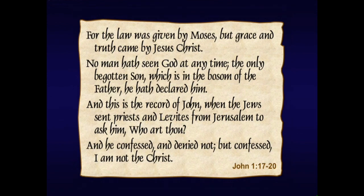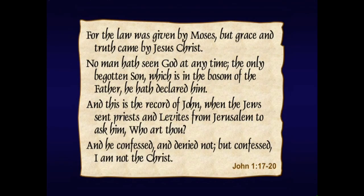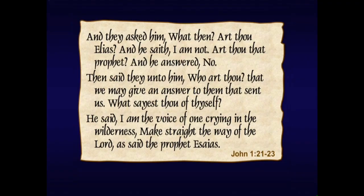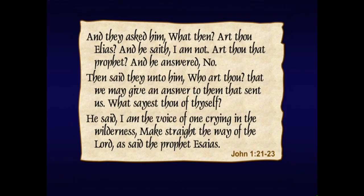The Jews sent priests and Levites from Jerusalem to ask John, 'Who art thou?' They were expecting three different figures. He confessed, 'I am not the Christ.' They asked, 'Art thou Elias?' — Elijah was predicted to return in Malachi chapter 4. He said, 'I am not.' 'Art thou that prophet?' — referring to the prophet of Moses in Deuteronomy 18. He said no. Then they asked, 'Who art thou, that we may give an answer to them that sent us?' He said, 'I am the voice of one crying in the wilderness: make straight the way of the Lord, as said the prophet Isaiah,' quoting Isaiah 40.